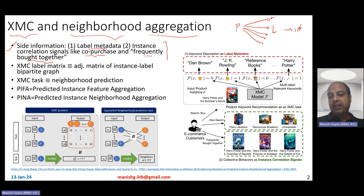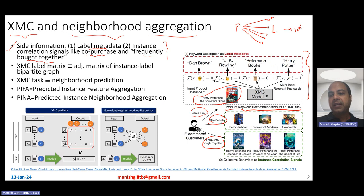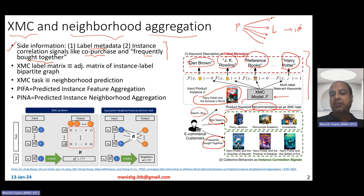Here is an example. An e-commerce customer searches or buys things, frequently buys together stuff. In this particular example, the XC problem is to recommend product keywords. So if my input is 'Harry Potter and the Sorcerer's Stone,' what I want my XC model to do is determine whether labels like Dan Brown, J.K. Rowling, Reference Books, or Harry Potter are relevant. Notice that the recommendation problem here is not to find relevant products, but to find good product keywords.